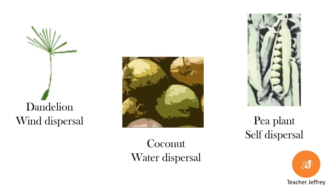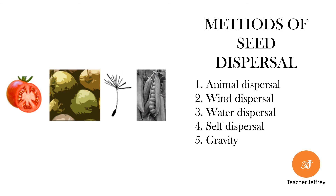There are other methods of seed dispersal aside from animal dispersal. These include wind, water, self-dispersal, and gravity. Therefore, there are five methods of seed dispersal: animal dispersal, wind dispersal, water dispersal, self-dispersal, and gravity.